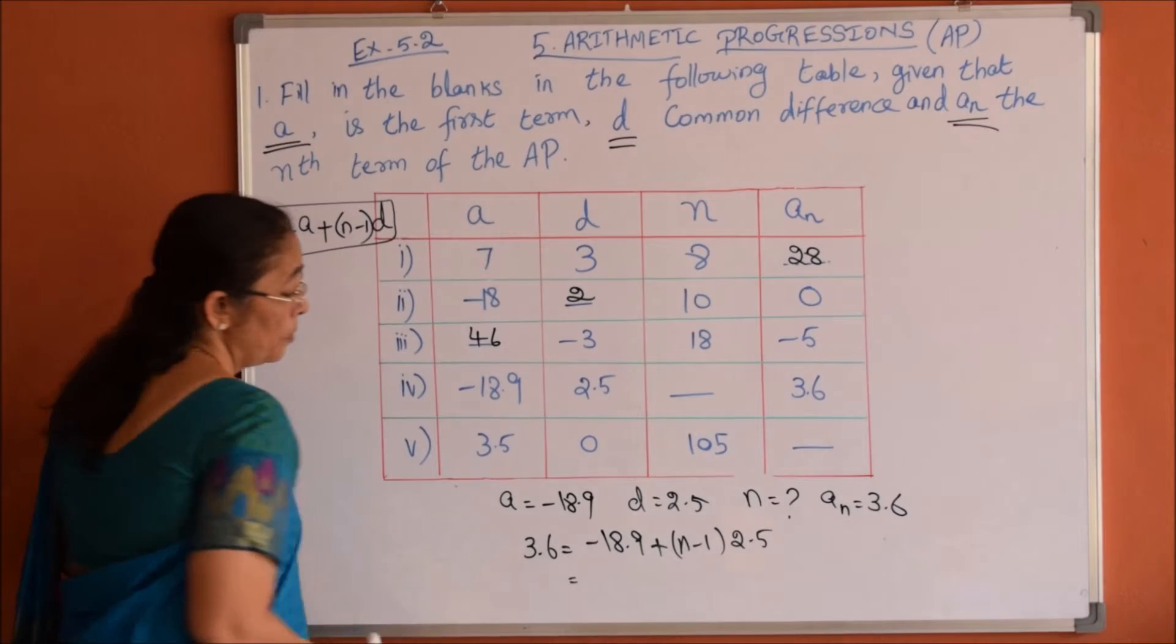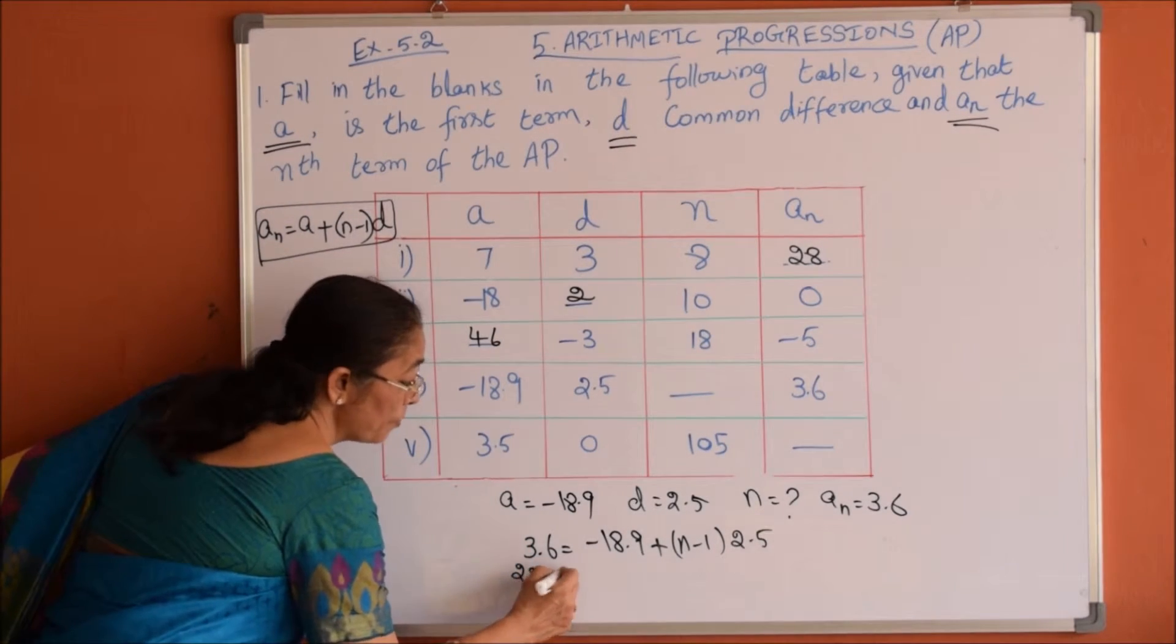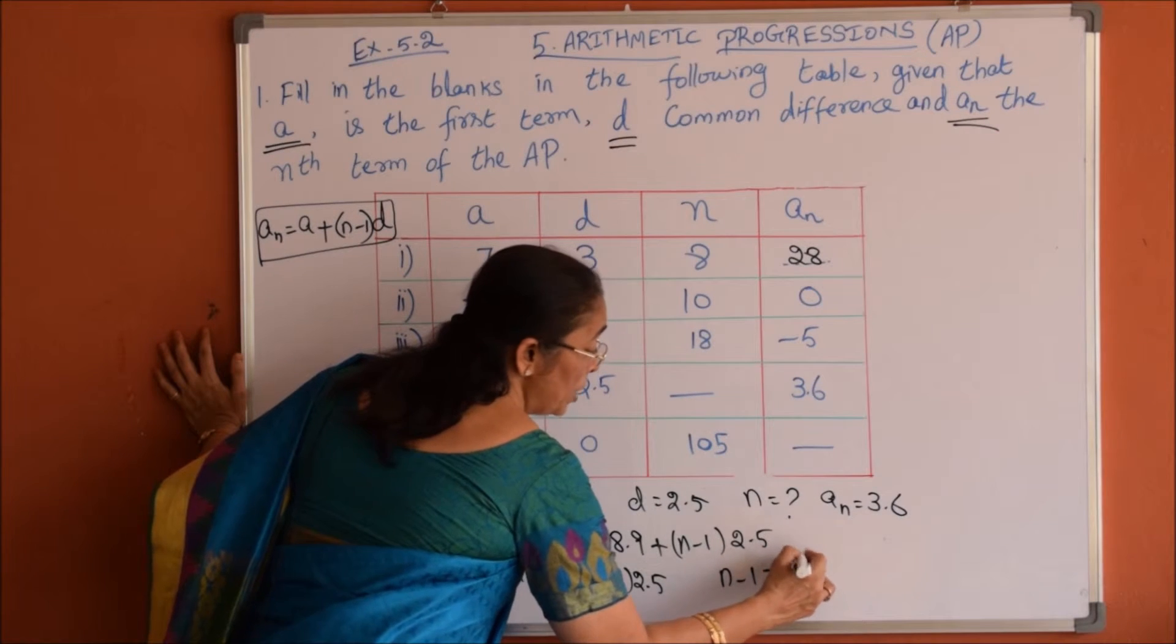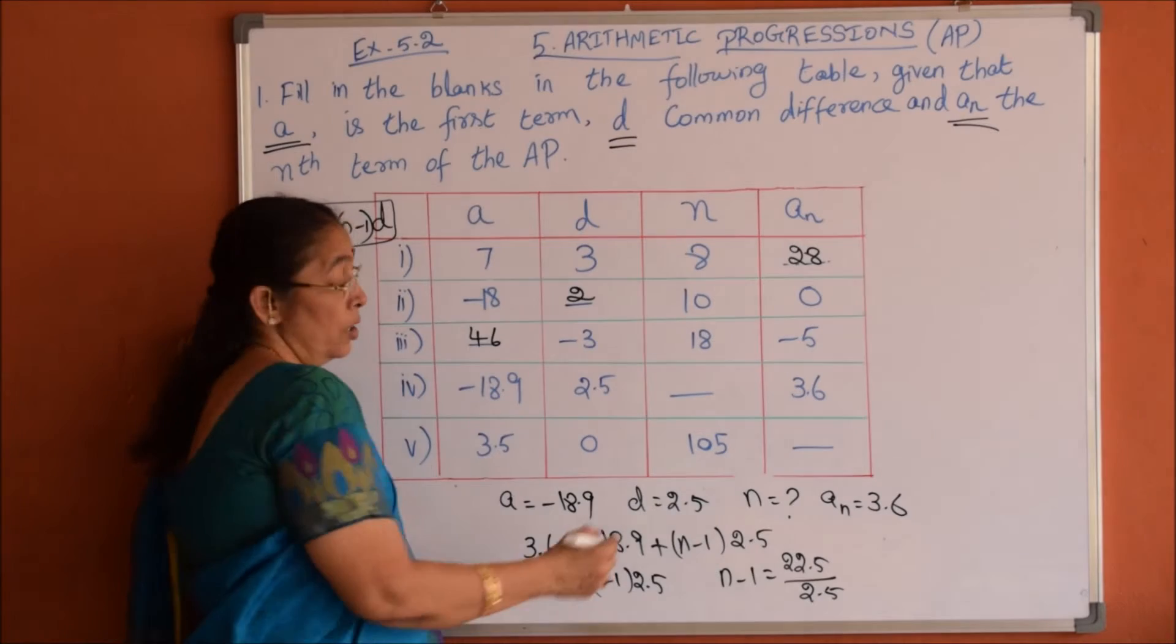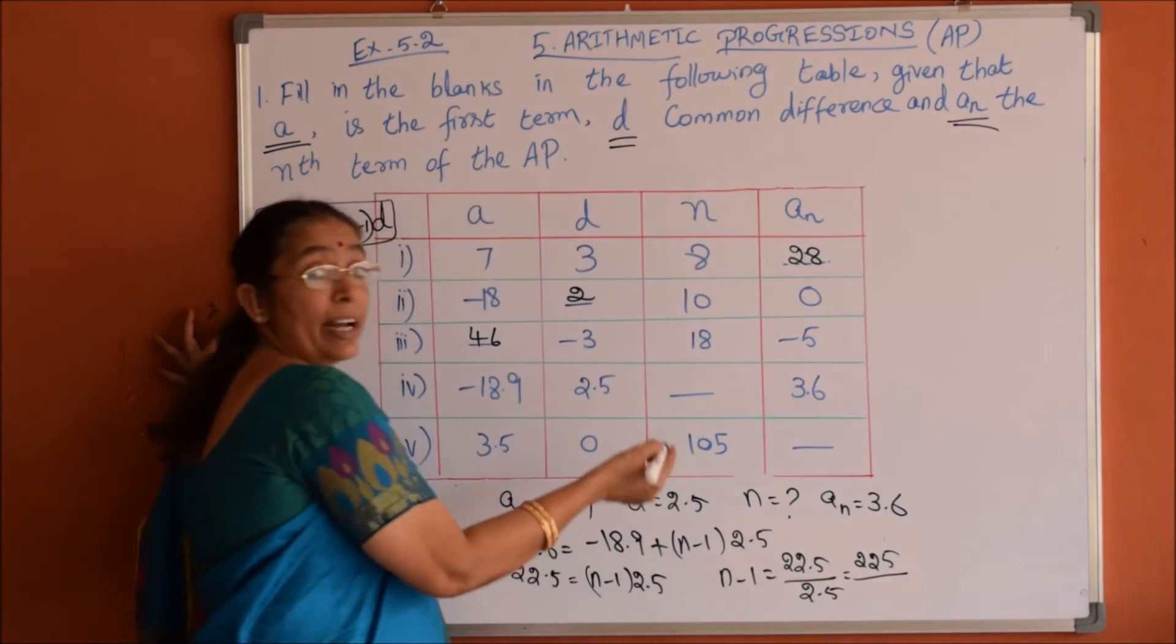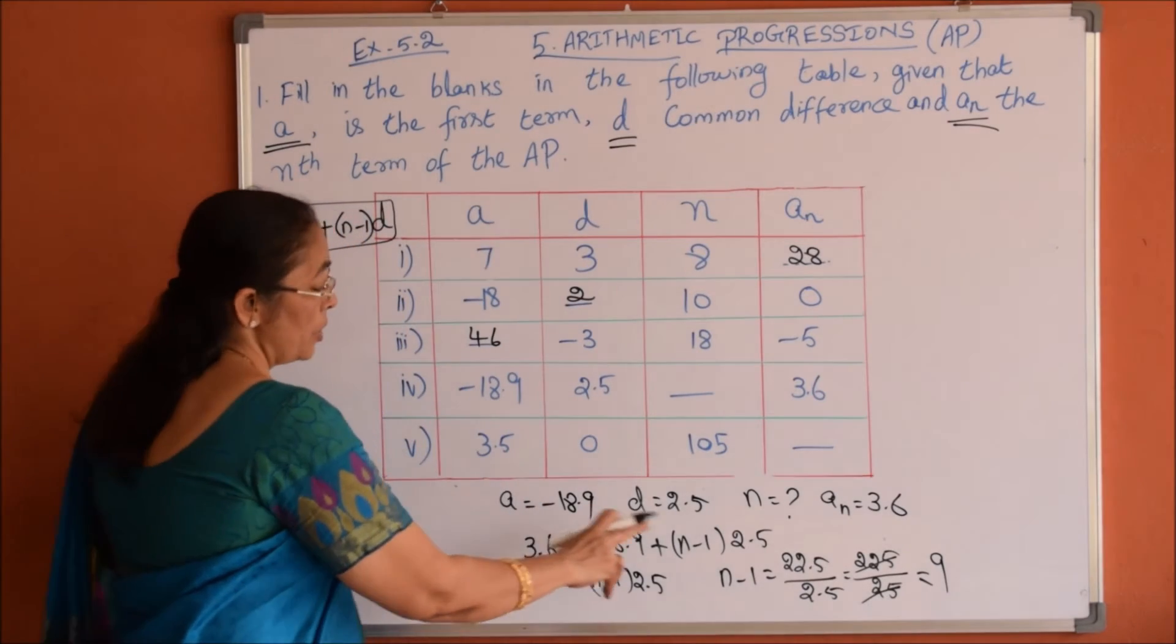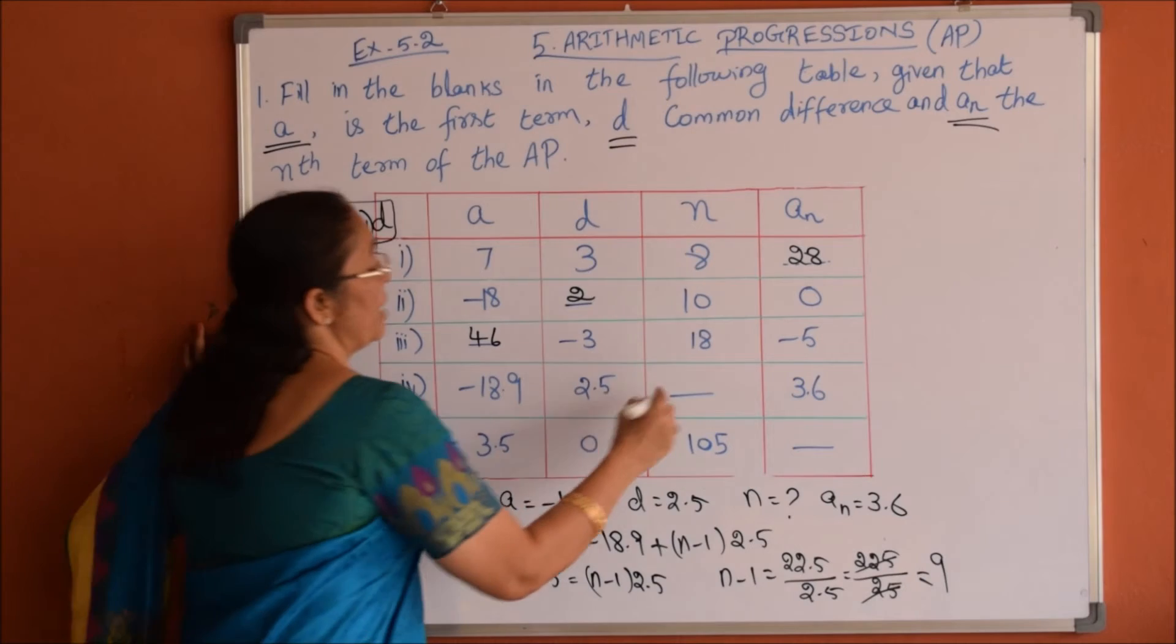So 18.9 plus 3.6 equals 22.5, which equals (n minus 1) times 2.5. Therefore, n minus 1 equals 22.5 divided by 2.5, which is 225 divided by 25, equals 9. So n equals 9 plus 1, which is 10.